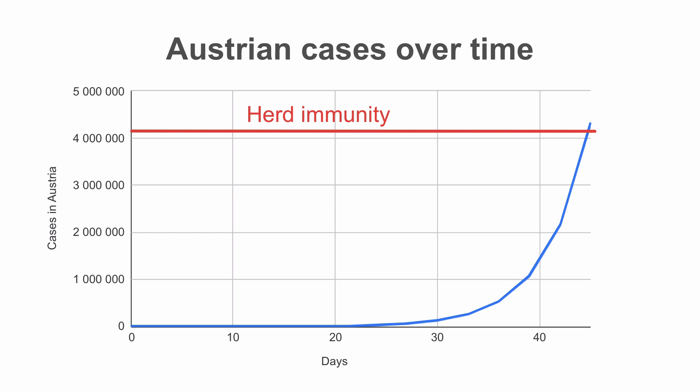But obviously, that would only happen if we wouldn't do anything against it — if we wouldn't implement any measures like social distancing, avoiding crowds, reducing unnecessary travel, and so forth. So that's the worst case scenario. If we don't pay attention in Austria, then in 18 days we would exceed the number of cases currently seen in Italy, which was 9,172 on March 10th. The situation in Italy, which is a neighboring country of Austria, is pretty bad. And if I tell people that number, they're actually quite scared — it's a bit of a wake-up call to them.